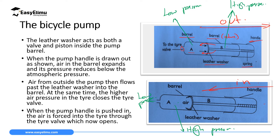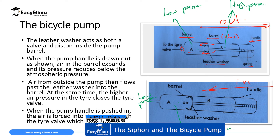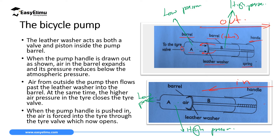When you pull back again, air at Barrel A will expand and pressure will be low. The valve of the bicycle tire is designed so that when there is high pressure inside the tire and low pressure outside, the valve closes. But when there is high pressure outside and low pressure inside, it opens. So when you pull out, pressure at A is low and the valve closes, preventing air from escaping. When you push in, pressure at A is high, so pressure outside is high and pressure inside the tire is low — the valve opens and air enters the bicycle tire.